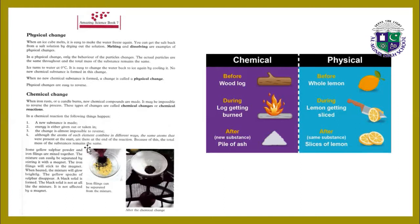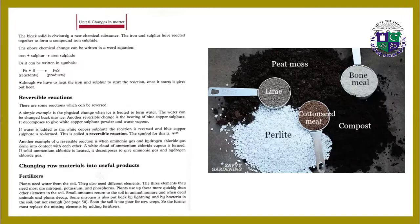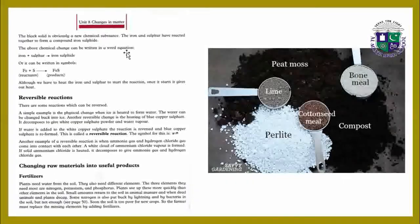Because of this, the total mass of the substances remains the same. Some yellow sulfur powder and iron filings are mixed together. The mixture can easily be separated by stirring it with a magnet — the iron filings will stick to the magnet. When heated, the mixture will glow brightly, the yellow pieces of sulfur disappear, and a black solid is formed. The black solid is not affected by a magnet. It is obviously a new chemical substance: the iron and sulfur have reacted together to form a compound, iron sulfide.